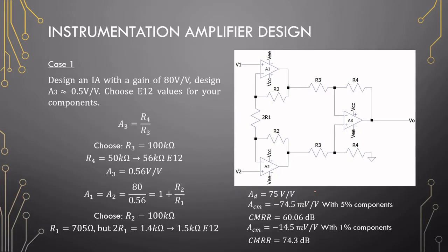Plain, straightforward design of the instrumentation amplifier: design an instrumentation amplifier with a gain of 80 V/V. Design the last stage to have a gain of 0.5 V/V. Choose E12 values for your components. We can take this 0.5 and set it directly to R4 over R3, choose an R3 value, and find R4. Choose E12 — that gives us a new A3 value. Then A2 and A1: the final gain of 80 divided by 0.56 gives the input stage gain. Choose a value for R2 and find R1. The R1 value you find needs to be doubled for the final component since this is 2×R1, and the E12 value is 1.5 kΩ.